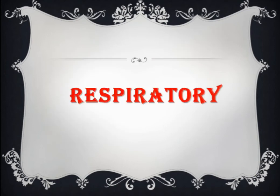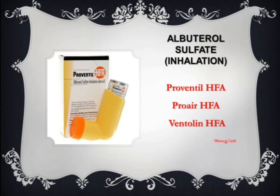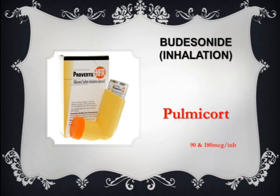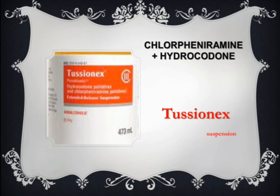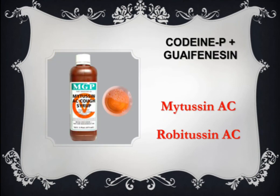Category: respiratory. Albuterol sulfate inhaler, trade names: Proventil HFA, ProAir HFA, and Ventolin HFA. Budesonide inhaler, trade name: Pulmicort. Combination inhaler of budesonide and formoterol fumarate dihydrate has trade name of Symbicort. Chlorpheniramine with hydrocodone, trade name: Tussionex. Codeine phosphate with guaifenesin, trade names: Mytussin AC and Robitussin AC.